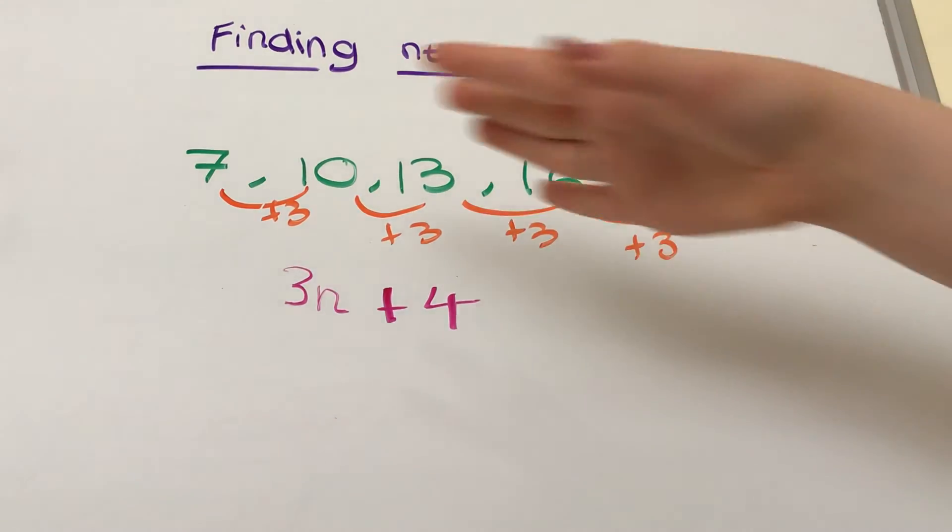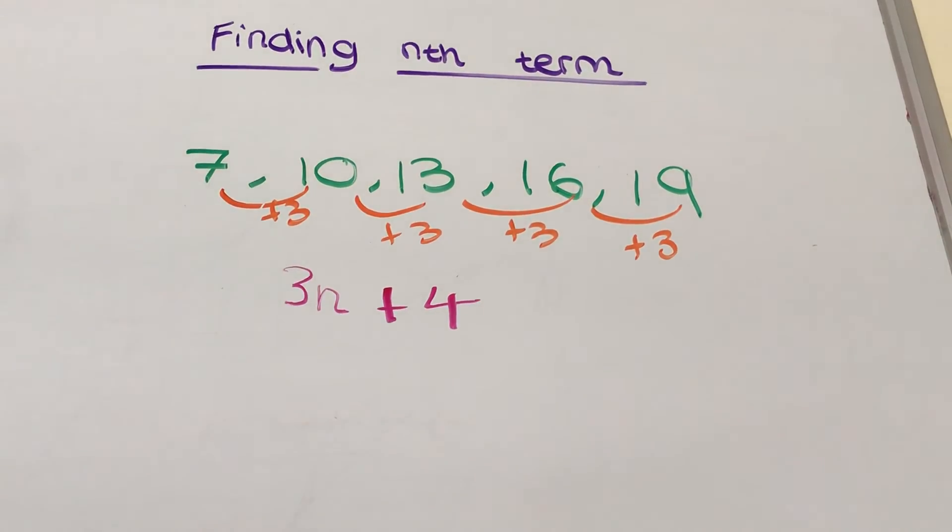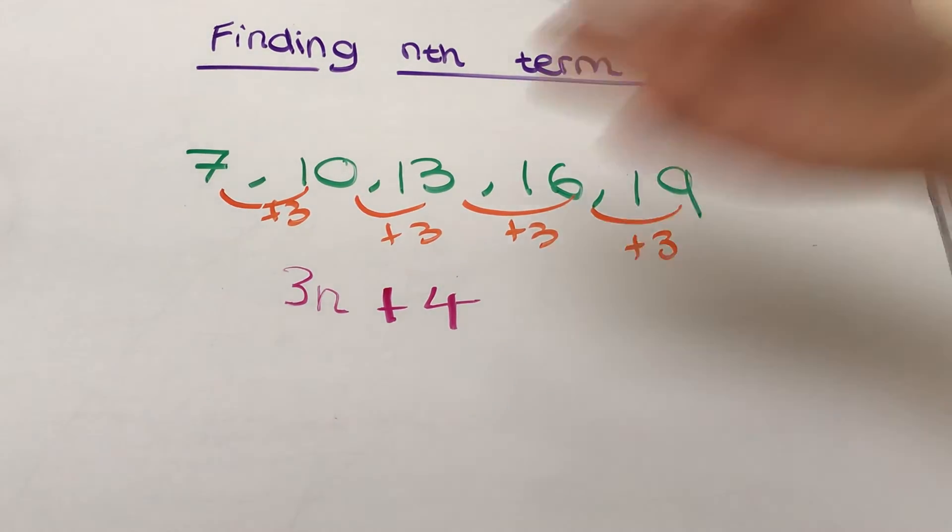So that's where the 3 comes from, and then our n—we're using the nth term, so that n represents essentially what the number is going to be for what number you're trying to find in the sequence. So that's why we plop that n in there.